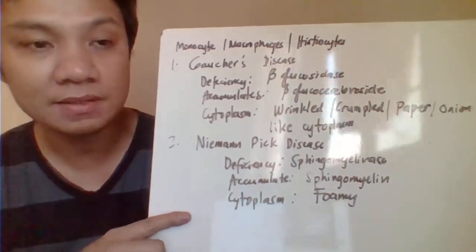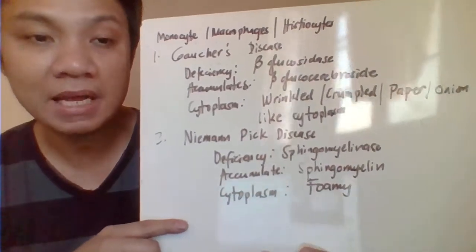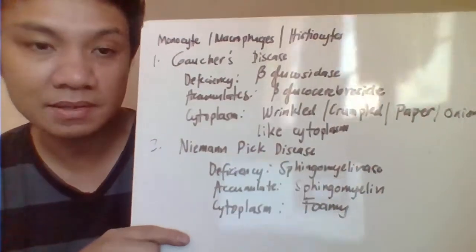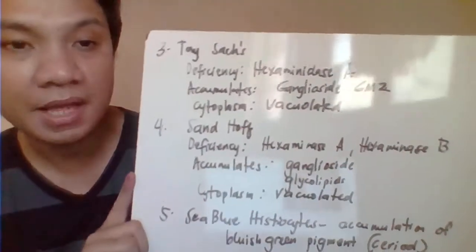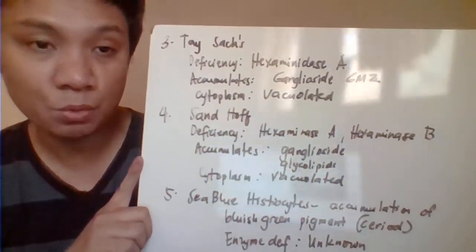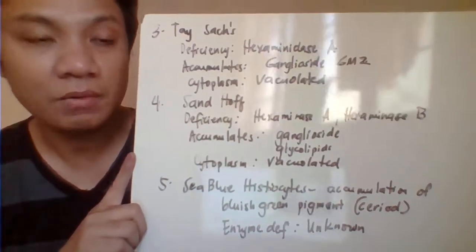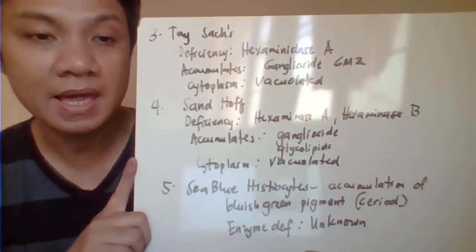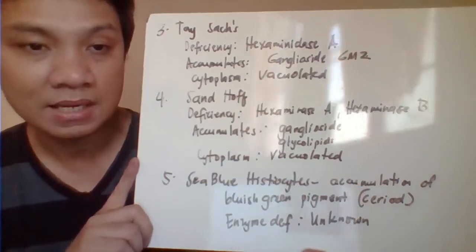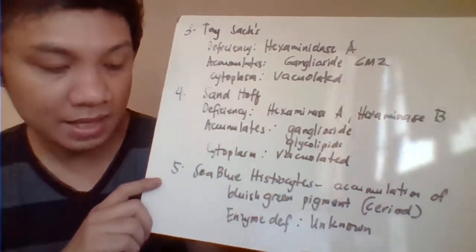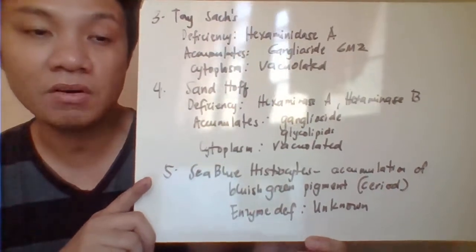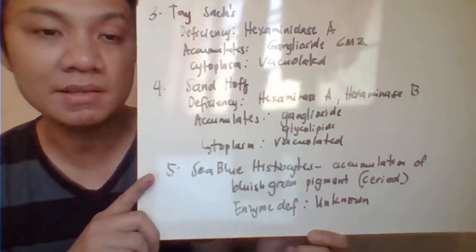Niemann-Pick disease is characterized by deficiency of the enzyme sphingomyelinase, resulting in accumulation of sphingomyelin, with a characteristic foamy cytoplasm. Tay-Sachs is characterized by deficiency of hexosaminidase A, resulting in accumulation of ganglioside GM2, with a vacuolated cytoplasm. Sandhoff disease is characterized by deficiency of both hexosaminidase A and hexosaminidase B, resulting in accumulation of gangliosides and glycolipids, also with vacuolated cytoplasm. Sea-blue histiocytes are characterized by a bluish-green pigment in the cytoplasm called ceroid, with unknown enzyme deficiency.